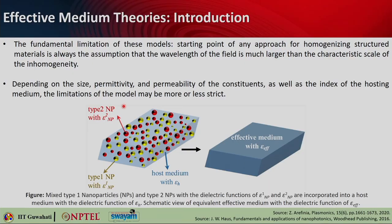Here is one example. You have a host medium with permittivity epsilon_h, which has some inclusions — basically nanoparticles. There are two different types of nanoparticles mixed in: type 1 with permittivity epsilon_1_Np and type 2 with permittivity epsilon_2_Np. These are homogeneously or randomly distributed in this host medium. Effective medium theory will be able to give you epsilon_effective of this composite system, giving an effective permittivity for the entire mixture.